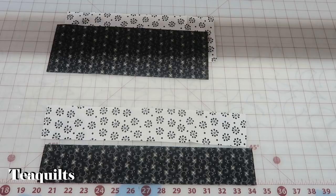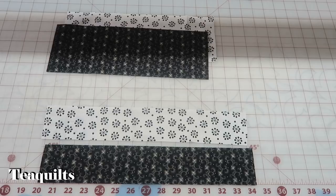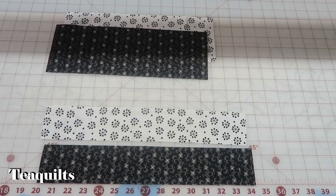So the first step, very simple sewing here again, we're just going to sew the strip set together and then I'm going to press the seam towards the dark. I'll do that and come back.